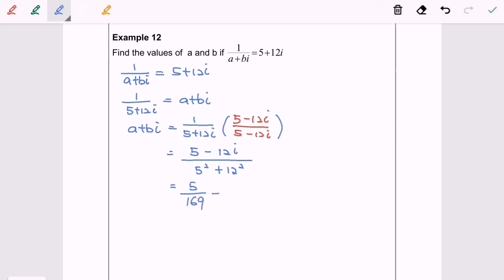169 minus 12i over 169, so which equals a plus bi. So we have the value for a is 5 over 169, and the value for b would be negative 12 over 169. So here we are and thanks for watching.